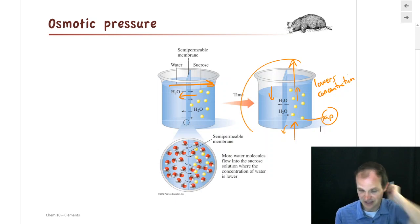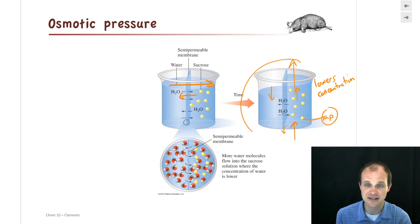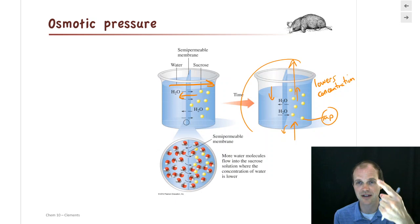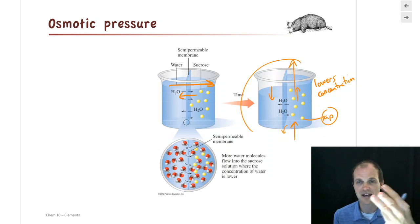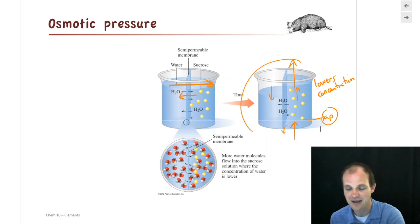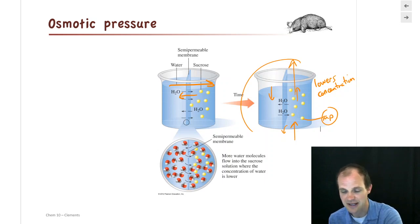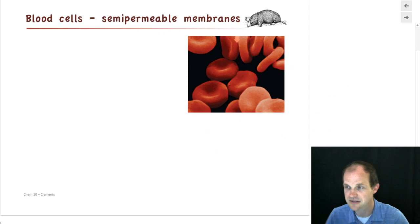Osmotic pressure is really important physiologically, including in our blood cells, which we'll talk about in a moment. Those are our three colligative properties: boiling point elevation, freezing point depression, and osmotic pressure. No calculations — we just want to understand the properties and identify what happens in each case.